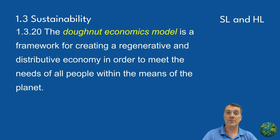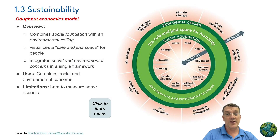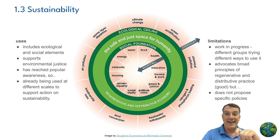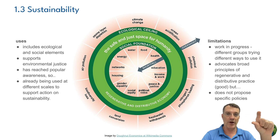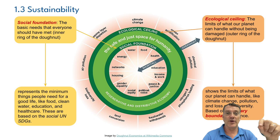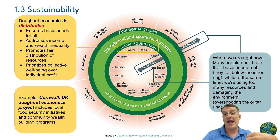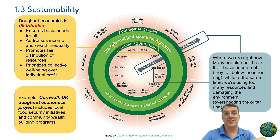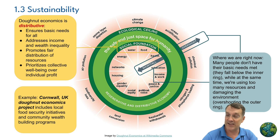The donut economics model is another model you might encounter in group three classes. It combines a social foundation with an environmental ceiling, visualizing a safe and just space — that's the zone in the donut, the part you would actually eat. It integrates both social and environmental concerns in a single framework, which is what makes it really useful. However, some aspects of the donut economics model can be difficult to measure precisely.